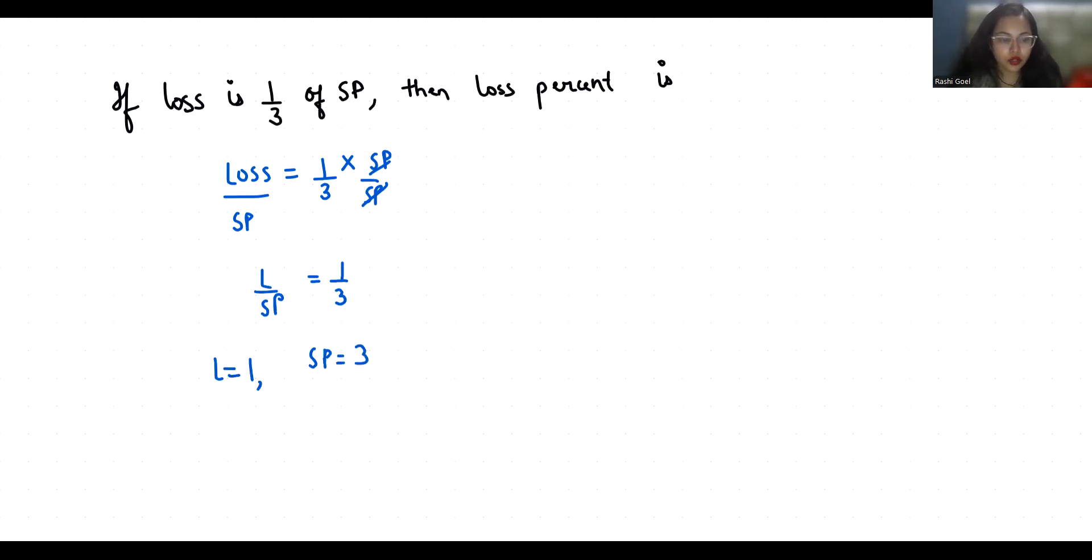So we are going to find our cost price, that is CP, which is equals to SP plus loss. That is 3 plus 1 is 4. So our CP is 4 whenever loss is 1 and SP is 3.